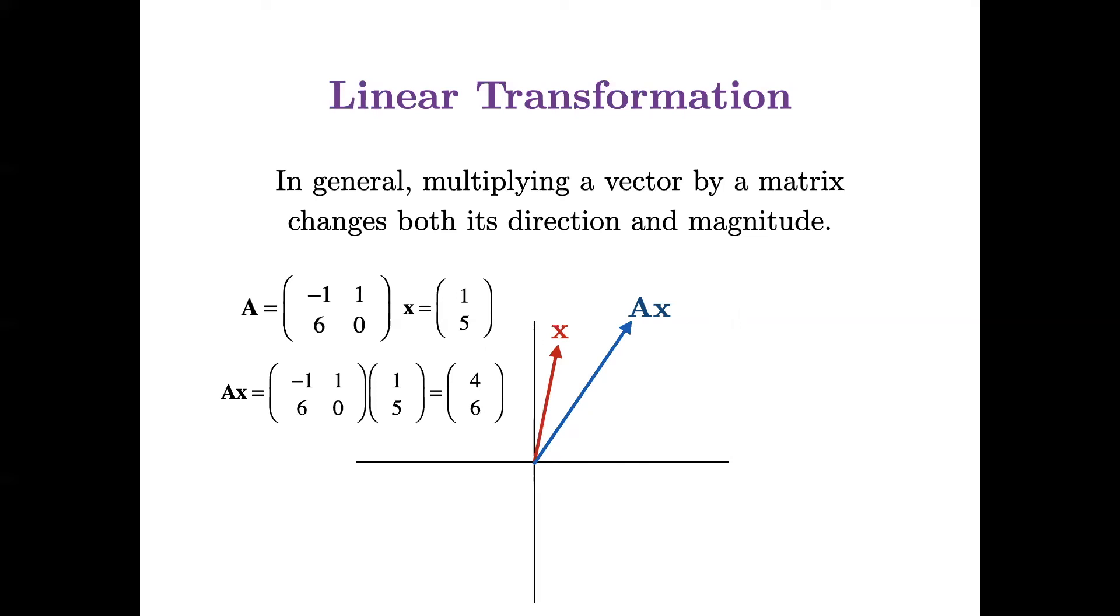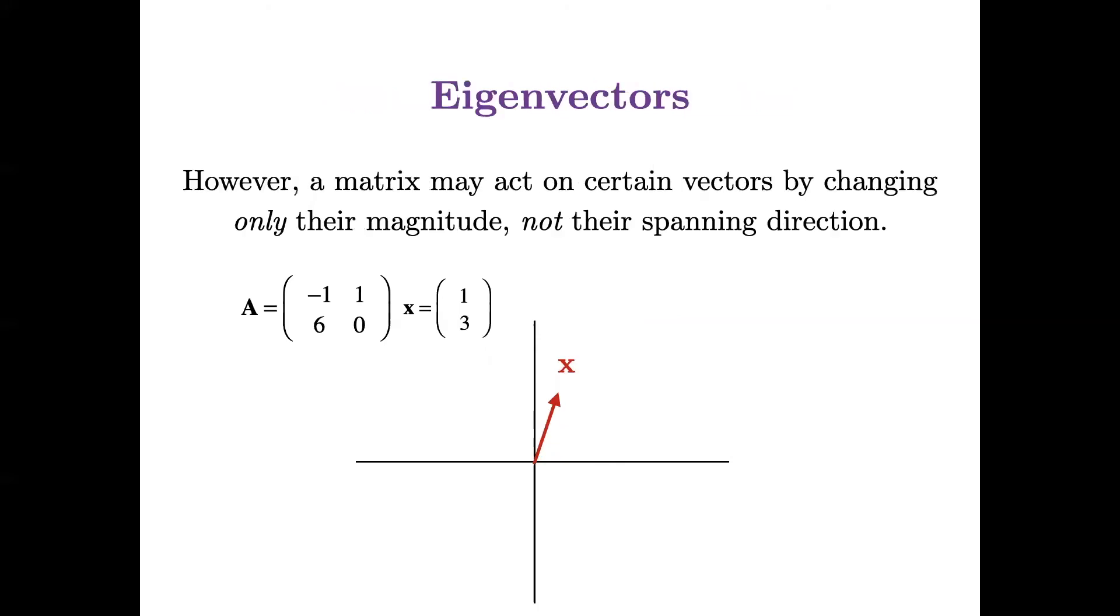Now, for all square matrices, you can have special vectors, where multiplying that vector by that matrix will change only its magnitude and not their spanning direction. So here I have the matrix A, the vector x, and when I multiply A times x, I get a vector that looks like a scalar multiple of x. So all this multiplication and addition had the same effect as if I had just multiplied x by a scalar number.